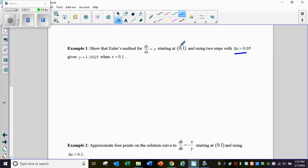Since our x value that we start with is 0, and our step size is 0.05, and we're going to 0.1, that means we need two steps. So let's do this. We need to create our table. We have x and we have y.